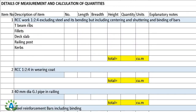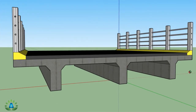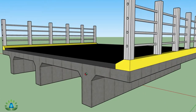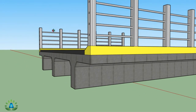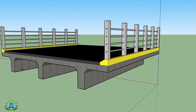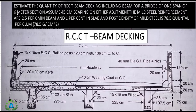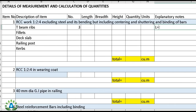First, we calculate the RCC work of mix 1:2:4 excluding steel but including centering and shuttering. We start with the RCC work in the T-beam ribs on all three sides. The total length of the T-beam ribs equals the 6-meter span plus 45 cm bearing on either abutment, giving: length = 6 + 2 × 0.45 = 6.9 meters. The number of T-beams is 3.